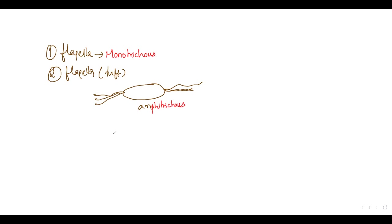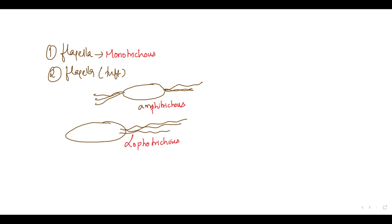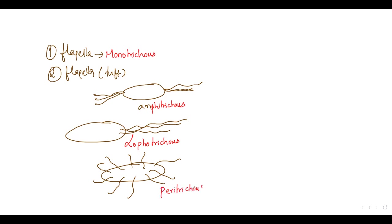If your bacteria is going to have a tuft of flagella present on one side only, then we are going to call this bacterium as lophotrichous bacterium. And if a bacteria is going to have multiple flagella on different directions all around, we are going to call such bacteria peritrichous bacteria. If the bacteria do not have any flagellum, we should regard such bacteria as atrichous bacteria.